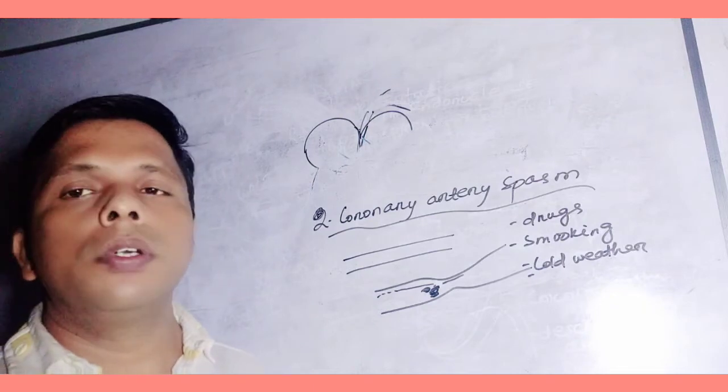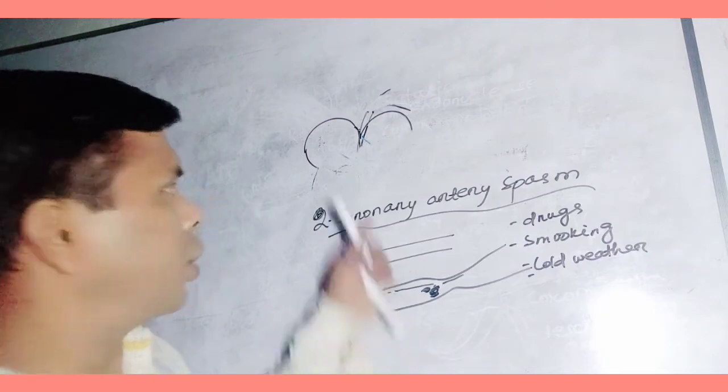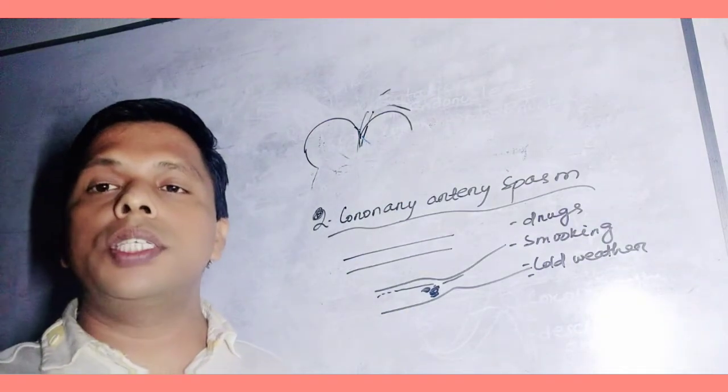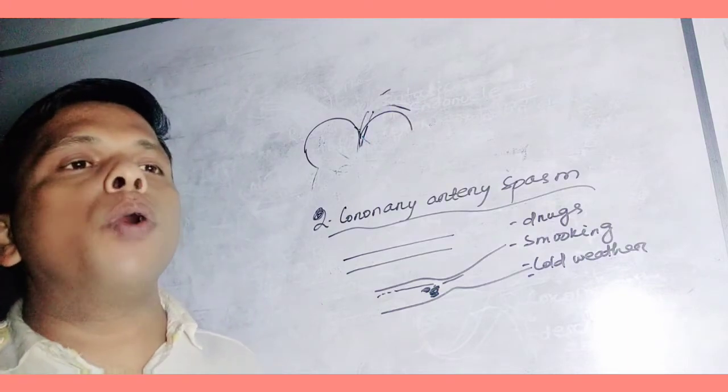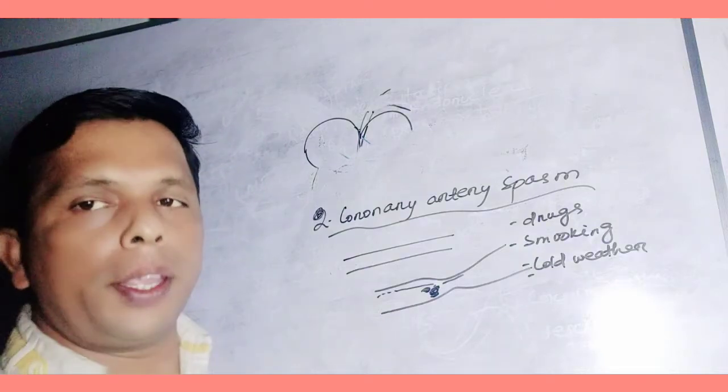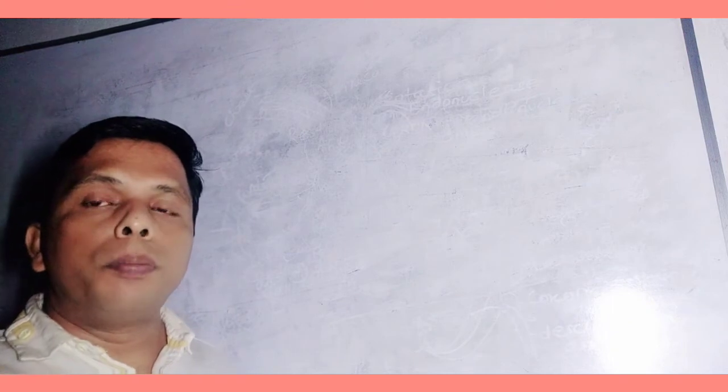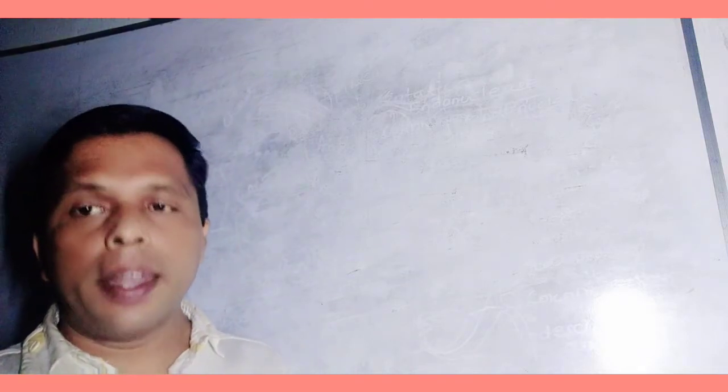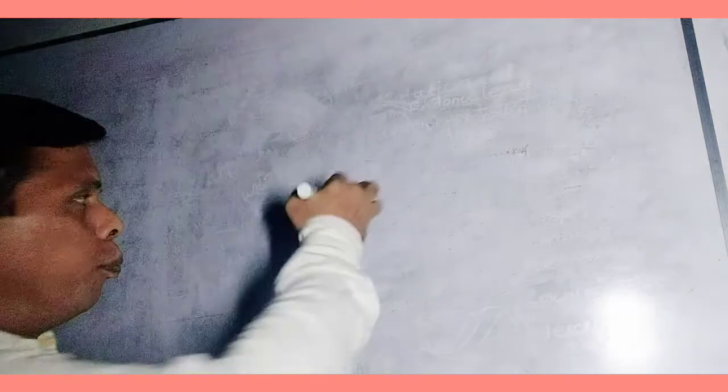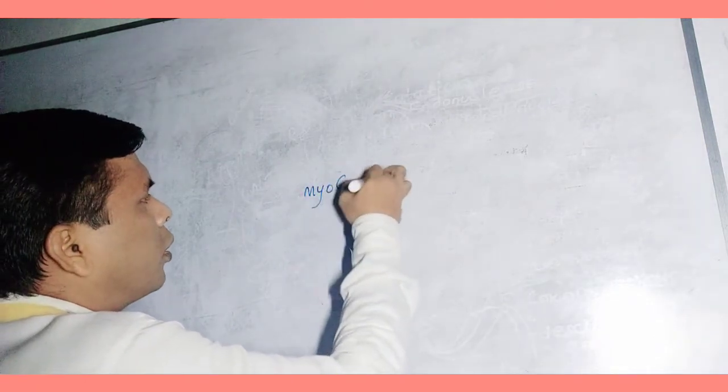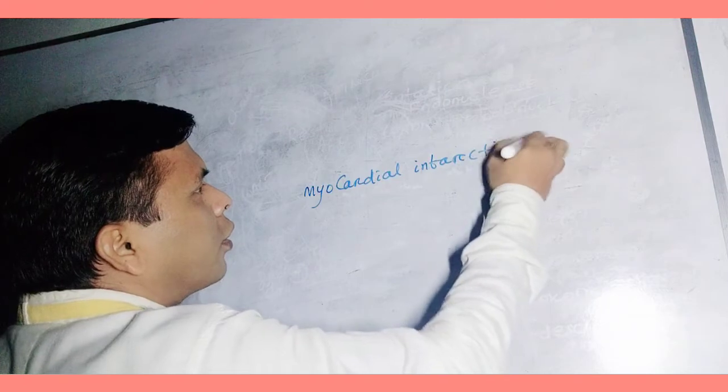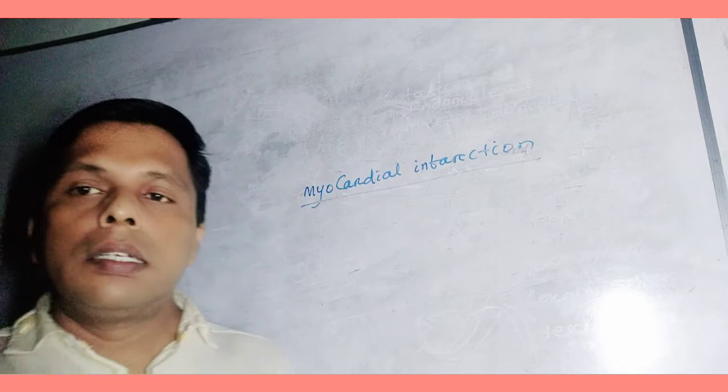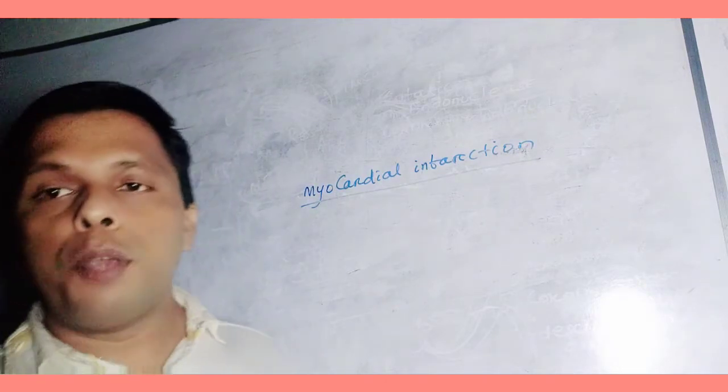Due to heart attack, the cardiac muscles, the heart muscles, die. Heart muscle will not get oxygen or food. Some cells will die. This condition is called myocardial infarction, that is called MI. This blockage prevents the supply of food and oxygen to cardiac tissue, so there is death of cardiac cells, cardiac muscles. This condition is called myocardial infarction.